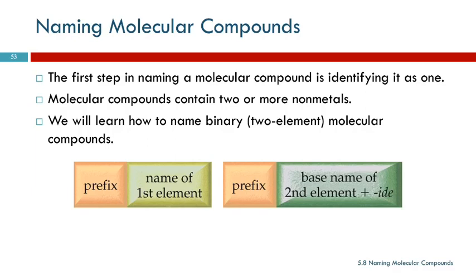We take the name of the first element and put a prefix on the front. This is where we use numerical prefixes like mono, di, tri, tetra, etc. to say how many. So the name of the first element, then another prefix, and then the base name of the second element, changed to -ide.